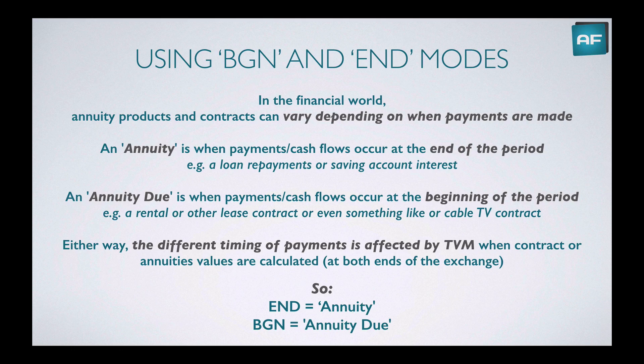A standard annuity is when payments and cash flows occur at the end of the period — like a home loan repayment or savings account interest, where you make the payment at the end of the month or receive the interest at the end of the year. On the other hand, there's an annuity due, where payments and cash flows occur at the beginning of the period. This could be a rental property, lease contracts, or even a cable TV contract, where you pay upfront for the month in advance, and then the following period you again pay at the beginning, covering you going forward.